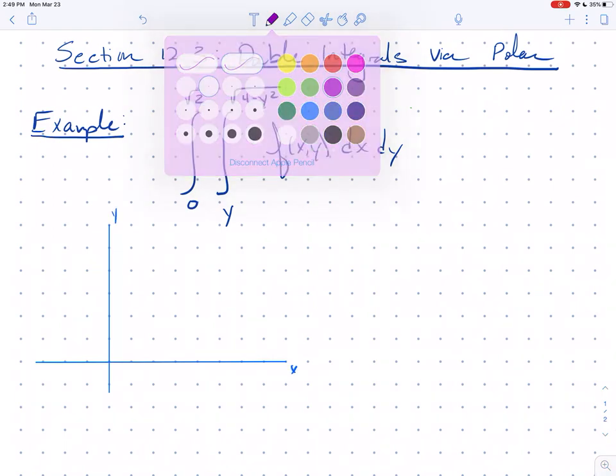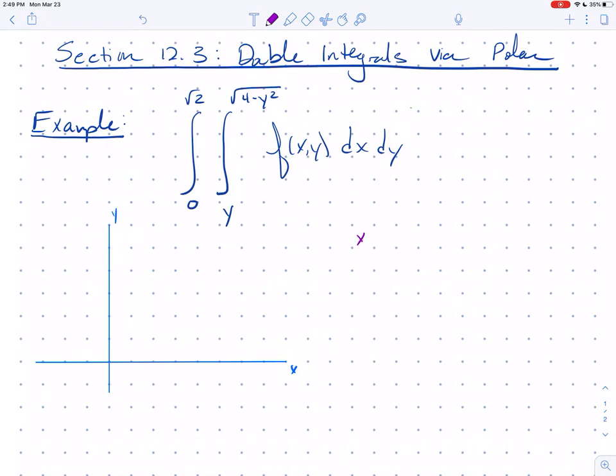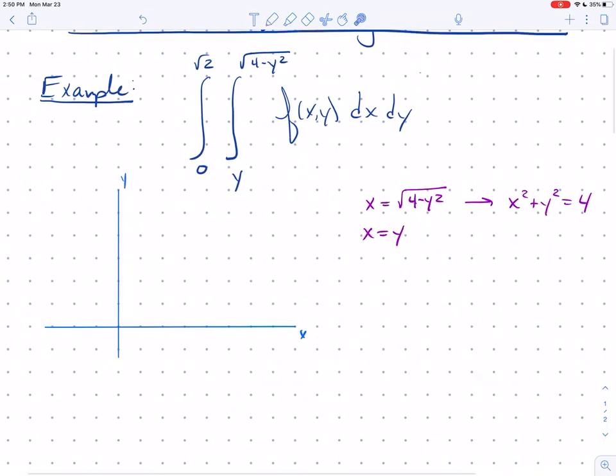I'm interested in the top equation: x equals the square root of 4 minus y squared, which becomes x squared plus y squared equals 4. The bottom equation is x equals y. Let's realize that this equation is the right-hand side of this circle.